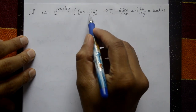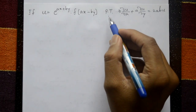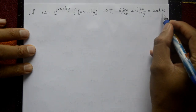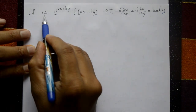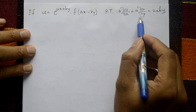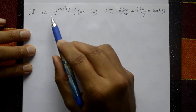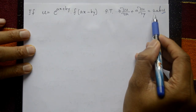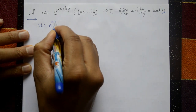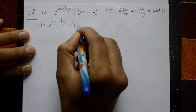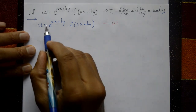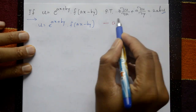Second problem: If u equals e^(ax+by) times f(ax − by), prove that b·∂u/∂x plus a·∂u/∂y equals 2abu. The approach is to differentiate u with respect to x and multiply by b (first equation), then differentiate u with respect to y and multiply by a, then add both equations to get 2abu.